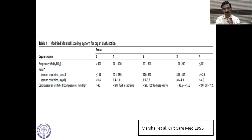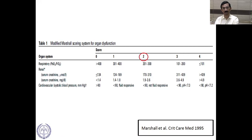The modified scoring system is used to determine organ dysfunction. We look at the respiratory, renal, and cardiovascular systems; any score of two or beyond indicates that system is involved, meaning you are dealing with something more than mild pancreatitis.